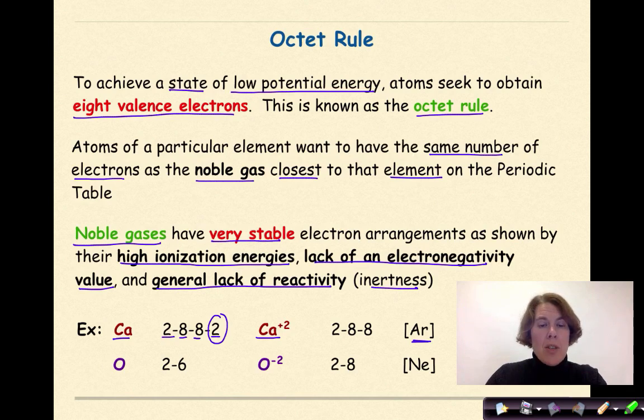Similar situation with oxygen. An oxygen atom has an electron configuration of 2-6. If it gains two electrons in this outermost shell, it becomes an oxygen ion with an overall charge of -2, and now has an electron configuration of 2-8, which matches that electron configuration of neon.